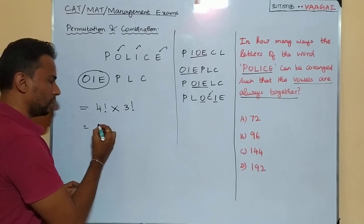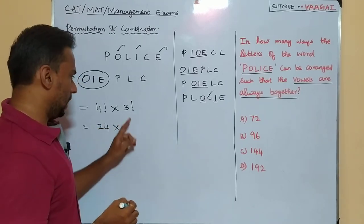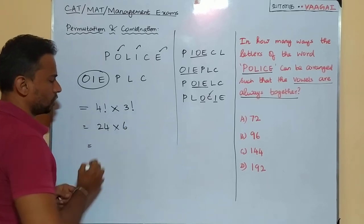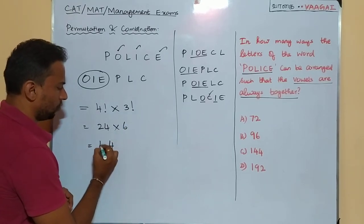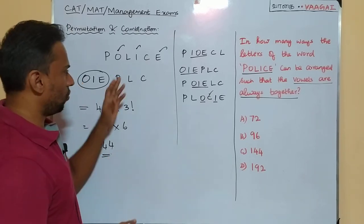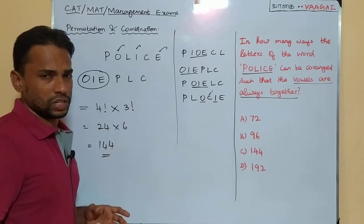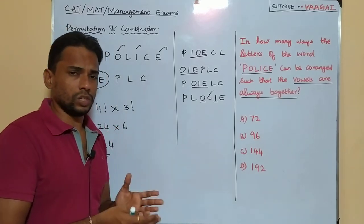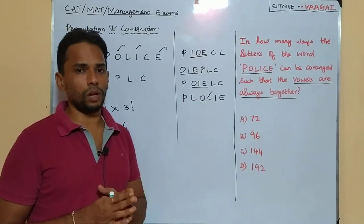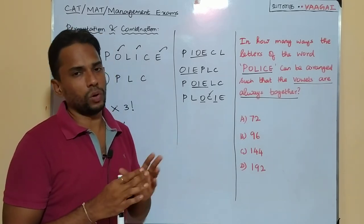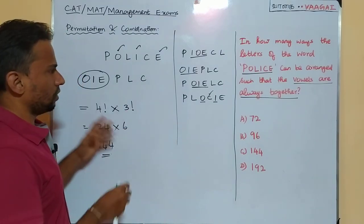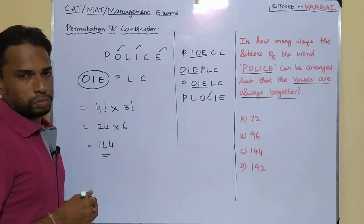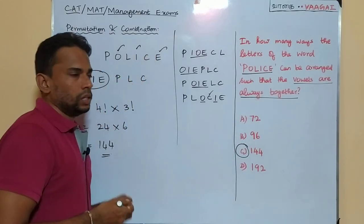Now we simplify: four factorial equals 24, because 4 × 3 × 2 × 1 = 24. Three factorial equals 6, because 3 × 2 × 1 = 6. So 24 × 6 = 144. Therefore 144 is our final answer, which corresponds to option C.